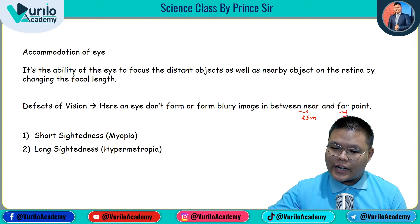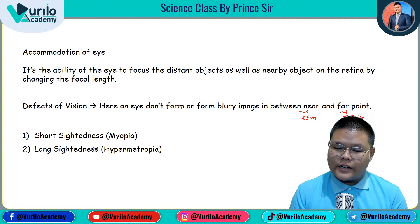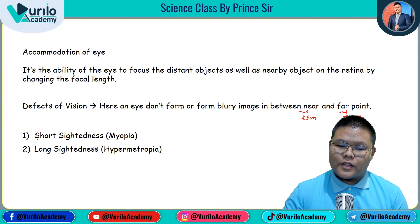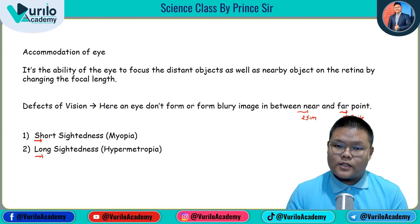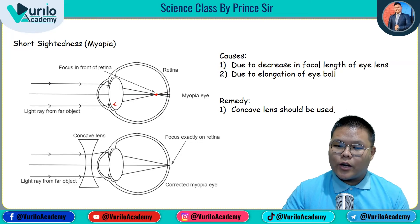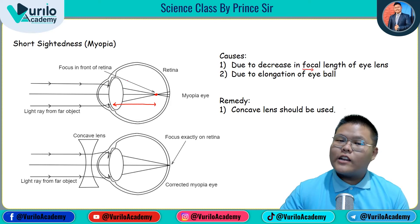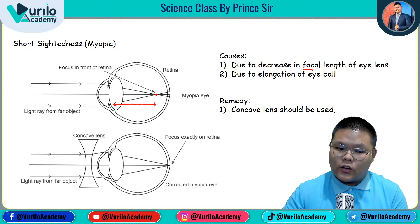Short-sightedness is called myopia, and long-sightedness is called hypermetropia. In myopia — short meaning nearby — the person can see near objects but not far. In myopia, the image focuses in front of the retina instead of on it. The focal length decreases, and the first cause is elongation of the eyeball — the eyeball becomes too long, so focus falls before the retina.